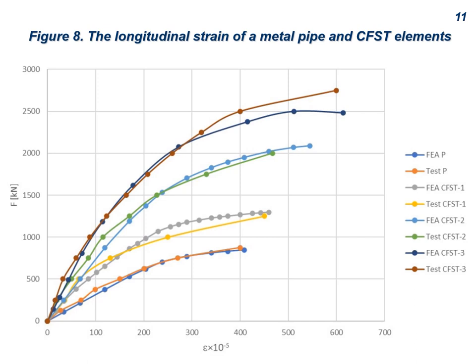Results comparison of simulation and natural experiments: The dependence of deformations of CFST elements on load were obtained from both test and FEA studies. The results are shown in Figures 8 and 9. A comparison of the two groups of results shows that the simulation method used is sufficiently accurate to study the behavior of short CFST elements. Particularly good correlation is obtained in the region of CFST linear deformations.